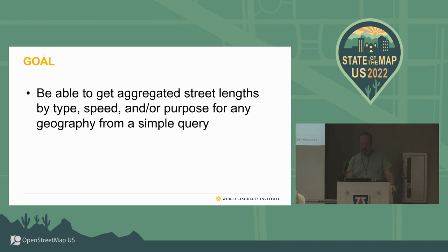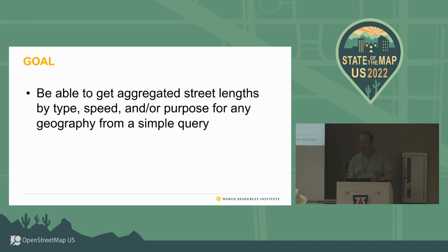Our goal was to be able to get aggregated street lanes for any geography, really, by type, speed, and purpose — so you're not necessarily restricted by jurisdictional boundaries, and you can figure out the shapes that make the most sense. Ideally you get this out of a simple query. We're not all the way there yet in terms of the full statement, but we've worked a lot on our backend.